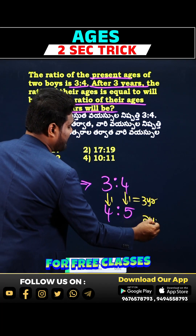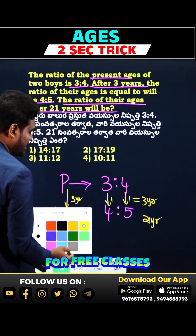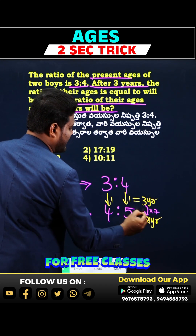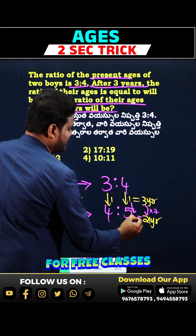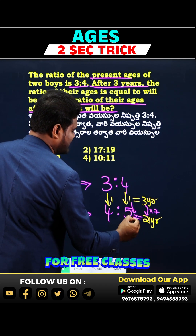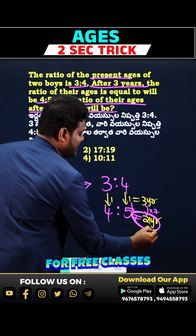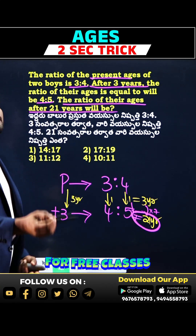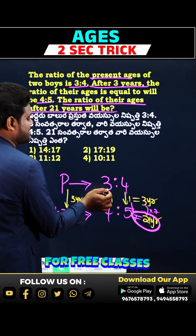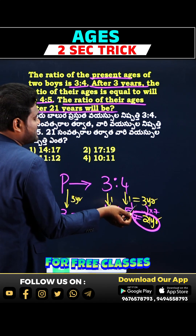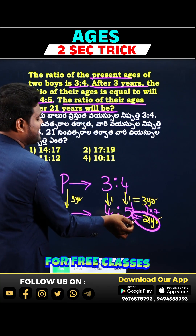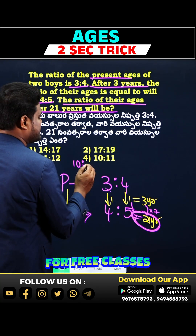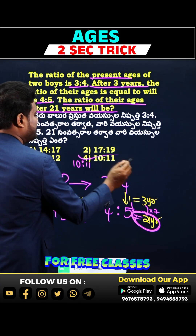21 years is how many parts? If you observe, 3 into 7 is 21, so similarly 1 into 7 is 7 parts. So 21 years equals 7 parts. The present ratio is 3 parts and 4 parts, so after 21 years we add 7 parts: 3 plus 7 equals 10, and 4 plus 7 equals 11.